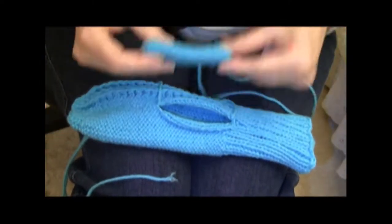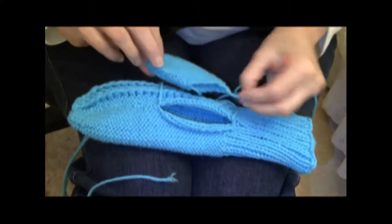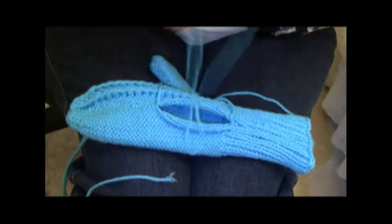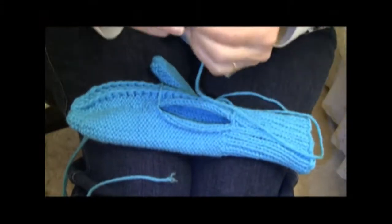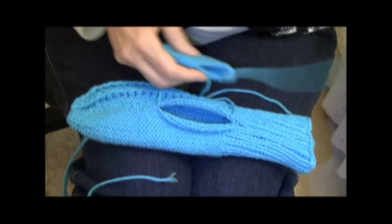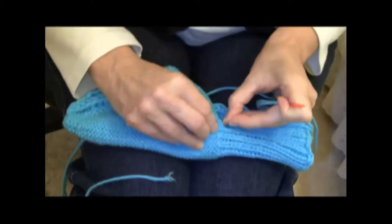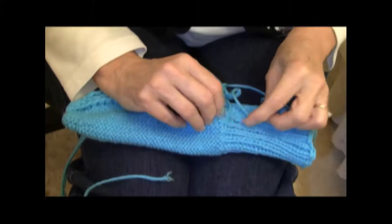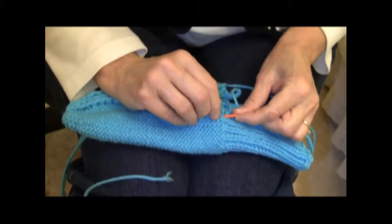Here is the thumb ready to be sewn in. I will thread the yarn from the bottom of the thumb, and I will begin sewing right here. The thumb will be inserted into the side seam.